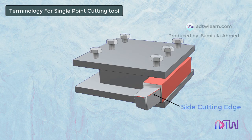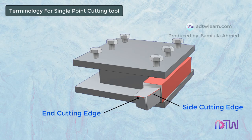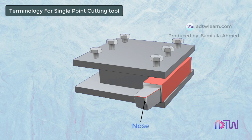These edges remove material from the workpiece. This edge of the tool is called the side cutting edge and this edge is called the end cutting edge. The point where the side cutting edge and the end cutting edge intersect is called the nose of the tool.